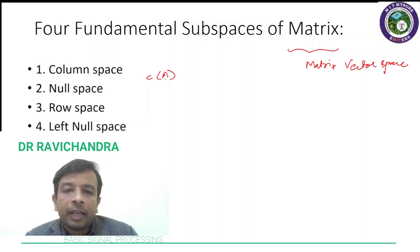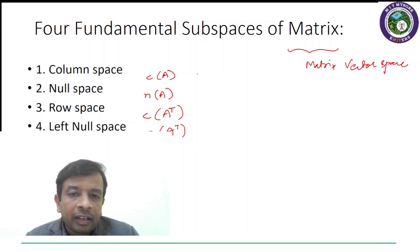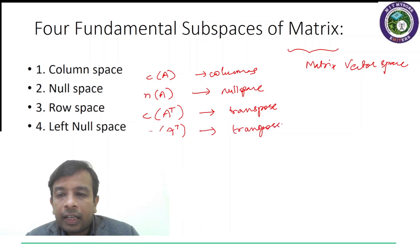We need to be particular here that this mentions about matrix vector space. We have column space which is denoted by C of A, null space which is denoted by N of A, row space which is denoted by C of A transpose and left null space which is denoted by N of A transpose. As the names of these fundamental subspaces indicate, they are related to columns or linear combination of columns, null space which means something related to 0, row space which is transpose related, and left null space which is again transpose related. You can keep these keywords in mind and we can take one after the other so that we can understand more about these four fundamental subspaces.